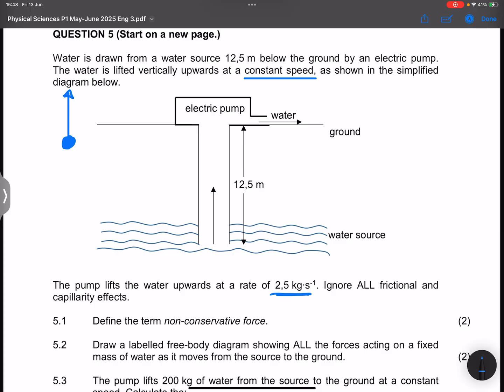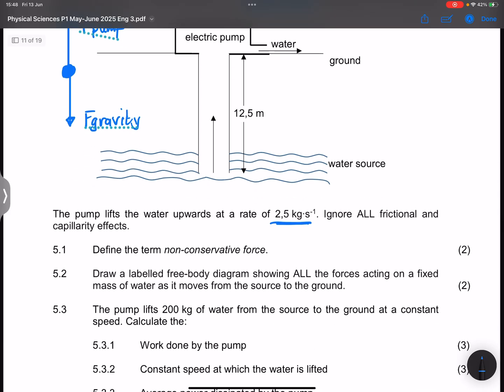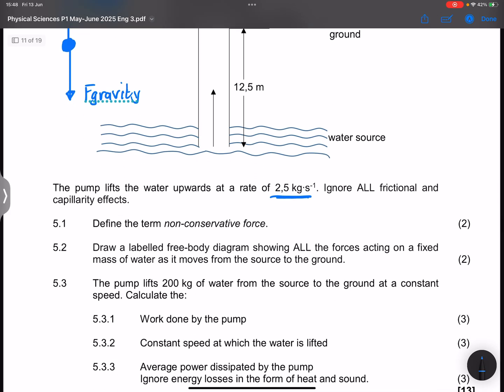It means the forces that are acting on the water would actually be balanced. So I've got the water, the force that is applied by the pump, as well as the gravitational force. Please indicate that those two forces are somewhat equal. And in this case, those are the two forces that we are dealing with. It's two marks for two forces.